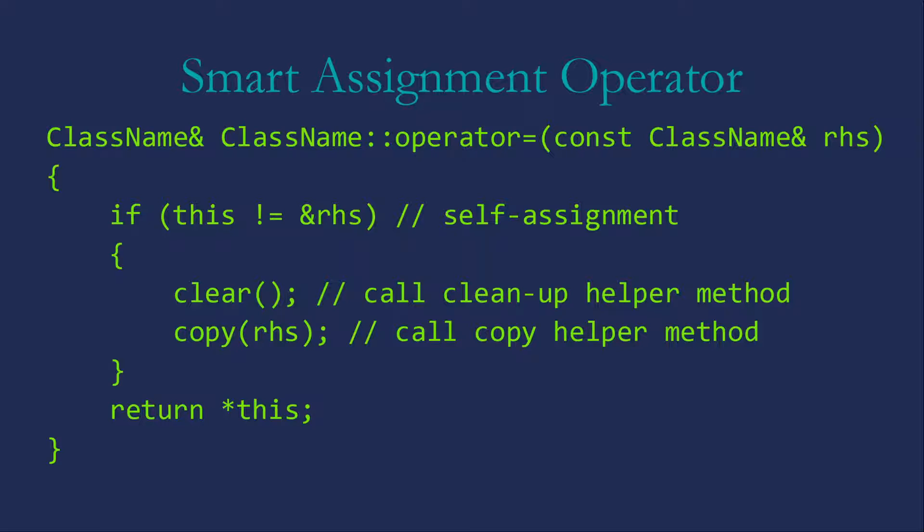If it's not self-assignment, then we're going to call our helper method for the clear or destroy, whatever we're calling our method for cleaning up our memory. And then we're going to call the copy passing in that object that was the parameter for the right-hand side. And finally, of course, return star this in either case.